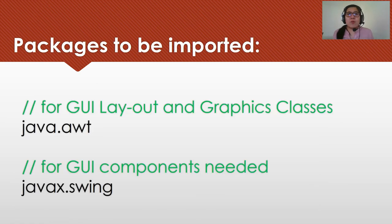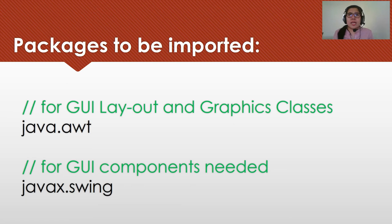What are the different packages to be imported? We still need java.awt for our layout, particularly layout managers, graphics classes, fonts, colors, and containers. For javax.swing, this covers the different GUI components such as J-Frame, J-Buttons, and others.